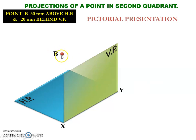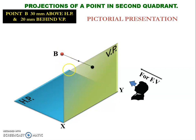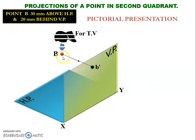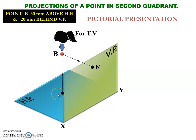To get the front view of this point B, we need to draw projectors towards the vertical plane and obtain the front view point as b'. In the same way, to obtain the top view of that same point B, we need to project it towards the horizontal plane and obtain the top view point, represented using small letter b.